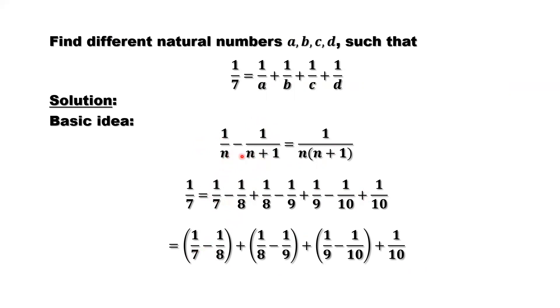That's 7, that's 7 plus 1, that's 8. So what is it? 7 times 8. Numerator is 1. Here is 8 times 9, numerator is 1. Here is 9 times 10, numerator is 1. Then 1 over 10. Use this result. Summarize and simplify.